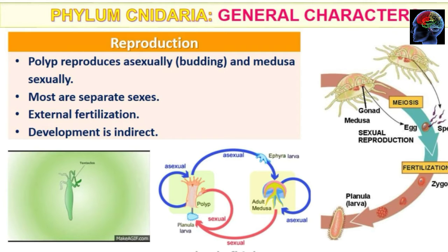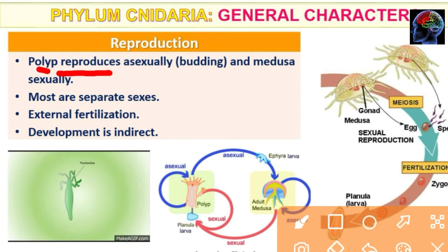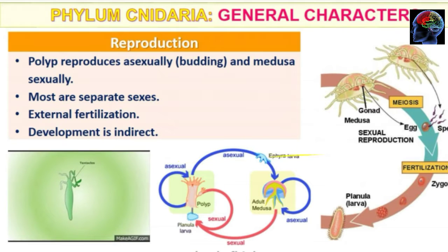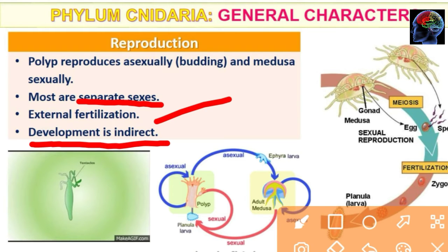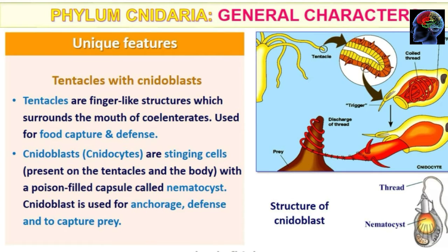Now we will talk about the reproductive system. There are two types of body forms: polyp and medusa. The polyp has asexual reproduction and medusa has sexual reproduction. Most are separate sexes — male and female sex organs are separate. Fertilization is external and development is indirect, meaning there is a larval stage first.